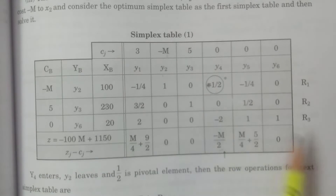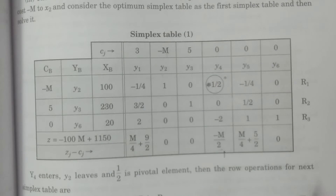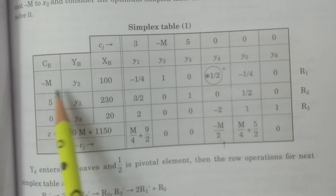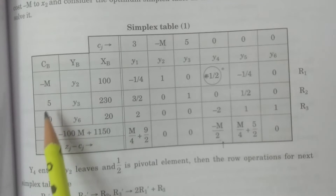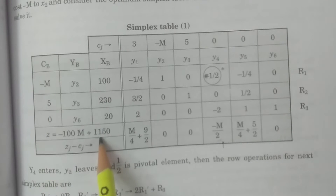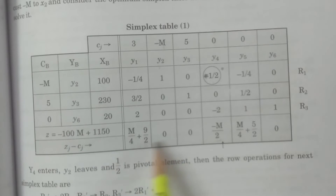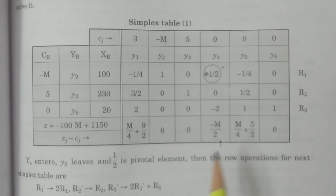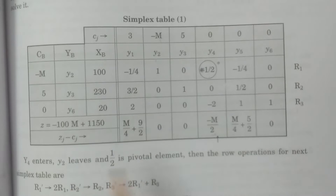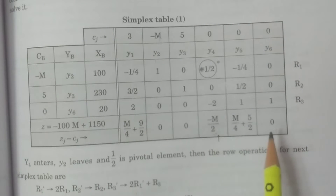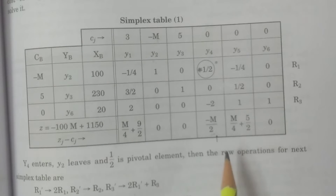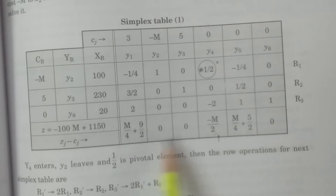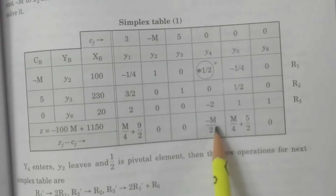After that, you have to calculate as usual: z = cB · xB = (−M)(100) + 5(230) + 0(20) = −100M + 1150. Then calculate all zj − cj net evaluations. We observe that one of the net evaluations is negative — that is −M/2, corresponding to y4.